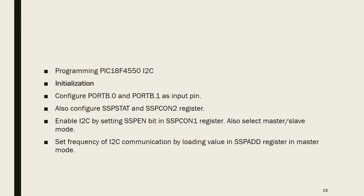For programming, follow these basic steps: configure Port B bit 0 and bit 1 as input pins; configure SSPSTAT and SSPCON2 registers; enable I2C by setting the SSPEN bit in the SSPCON register; select master or slave mode; and set the frequency of I2C communication by loading the appropriate value into the SSP-ADD register in master mode.